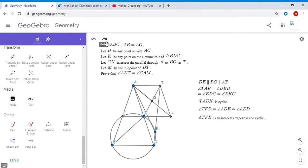So ATFE is cyclic, TAEK is cyclic. So we have two cyclic quadrilaterals both sharing three common points, so in fact all five points have to lie in a circle. So ATFKE is a cyclic quadrilateral, and we're almost there now.